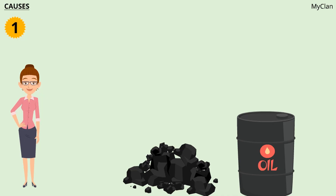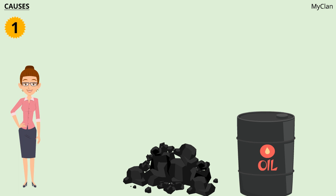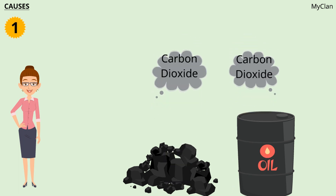Burning of fossil fuels like coal, crude oil, and natural gas for meeting the ever-increasing energy needs leads to emission of harmful air pollutants. Fossil fuels generate large quantities of carbon dioxide when they are burned. Carbon dioxide is termed as the leading pollutant because of its role as a greenhouse gas.